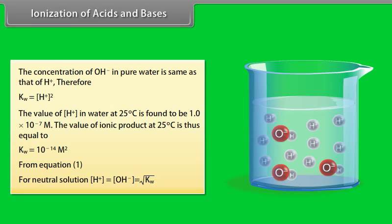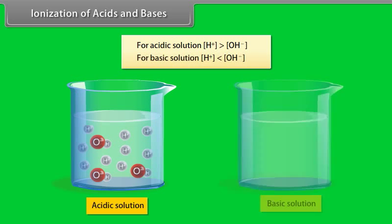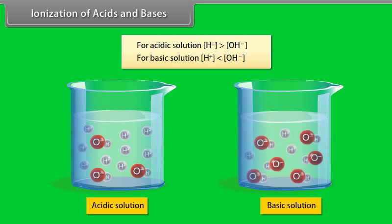For a neutral solution, [H⁺] = [OH⁻] = √Kw. For an acidic solution, [H⁺] is greater than [OH⁻]. For a basic solution, [H⁺] is less than [OH⁻].